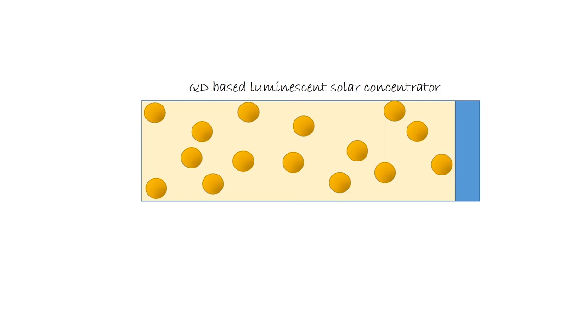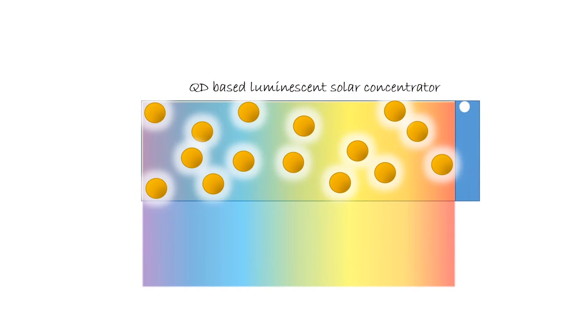In this case quantum dots are embedded into a transparent waveguide matrix to absorb directly diffuse sunlight, and then they re-emit photons of lower energy, which are then converted by conventional silicon solar cells. This type of devices can be used for building integrated photovoltaics, and the advantage of calcopyrite quantum dots here is that they have high absorption coefficients, high luminescence quantum yields, and also they have a large Stokes shift, which will allow to limit the re-absorption problem.